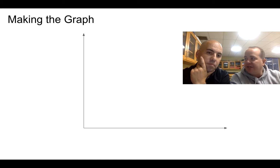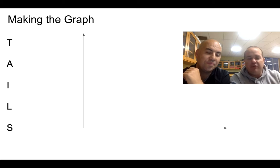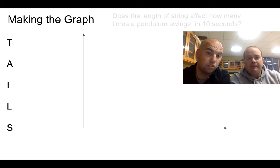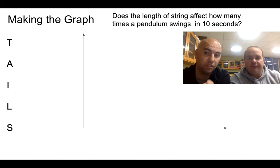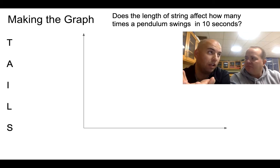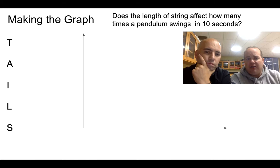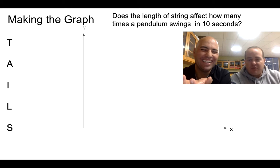Now we're actually going to get to making the graph. You have your x and y-axis so you can draw those out. It's just a matter of simply going through and remembering TAILS. We want to make sure that we have our title: does the length of string affect how many times a pendulum swings in 10 seconds. Does it always have to be that lengthy? No, it needs to be descriptive. We want to make sure that when somebody looks at the graph they know what they're talking about.